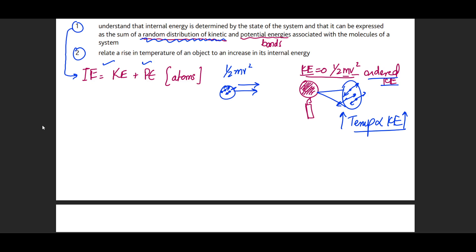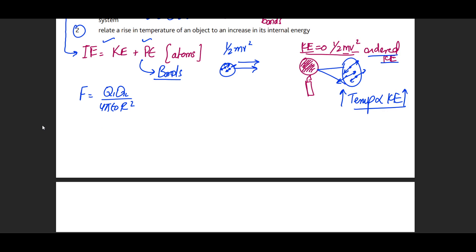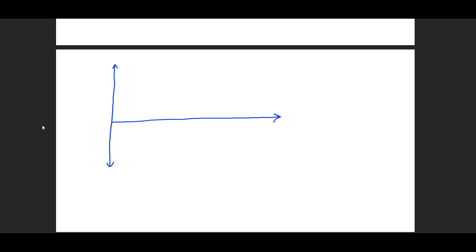Now let's discuss where potential energy comes from. In another video I explained the electric force between two charged particles: F = q₁q₂ / (4πε₀r²). From this point onwards the discussion is partly in terms of chemistry, so we can understand what potential energy means. There is a graph of potential energy with reference to the distance between molecules, where distances are in picometers or nanometers because atomic distances are very small.